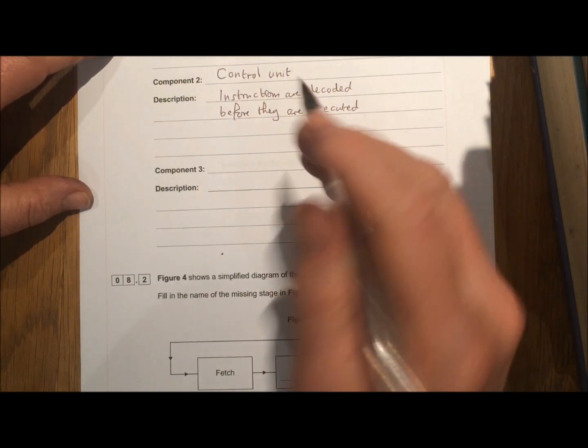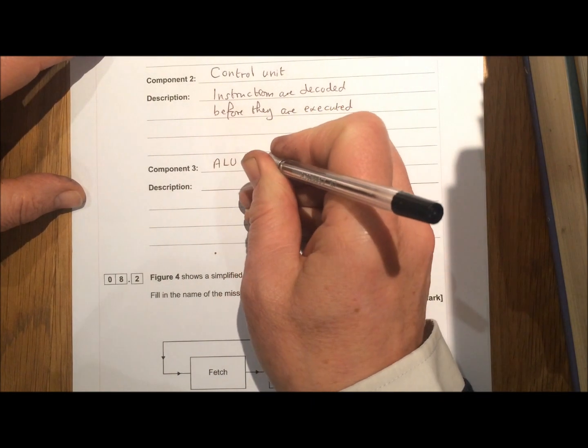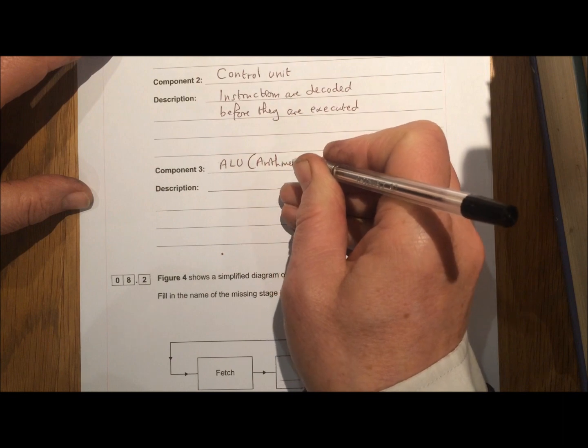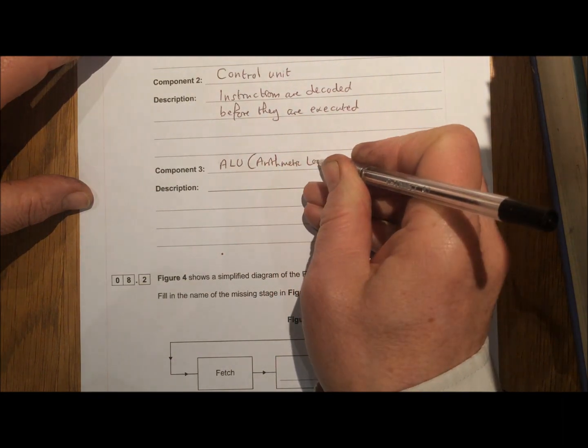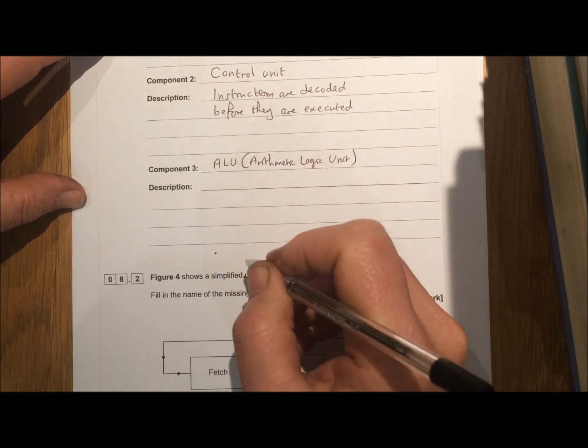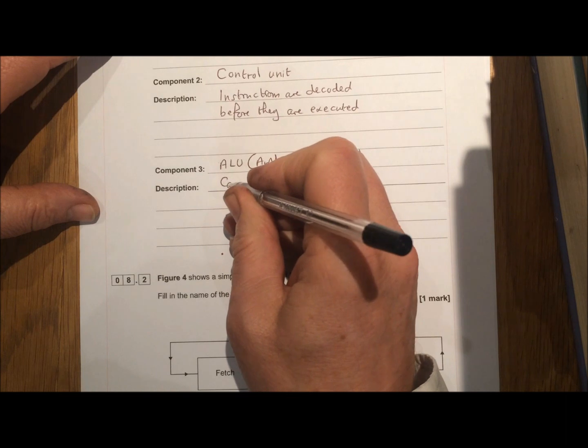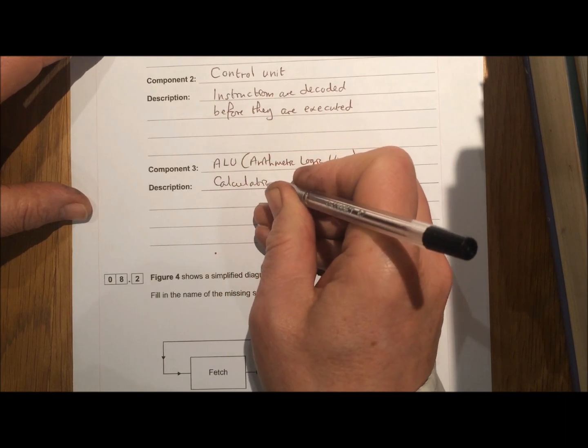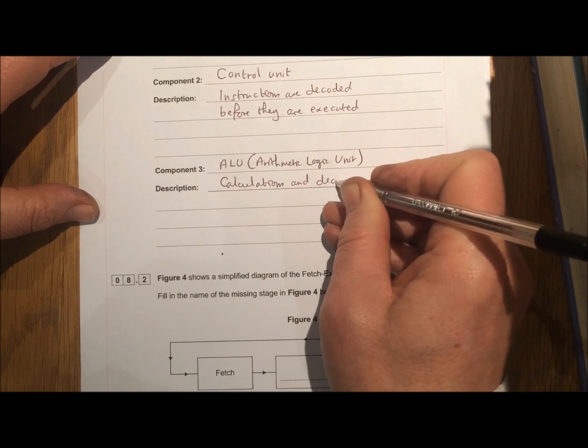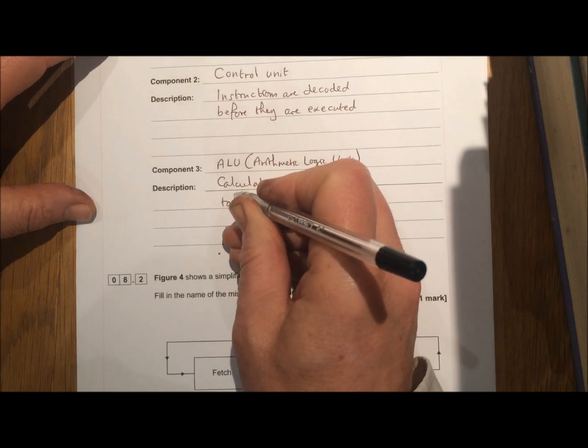Another component we could talk about. We can talk about the ALU, which stands for the Arithmetic Logic Unit. The Arithmetic Logic Unit is where all the calculations take place. So calculations and decisions take place here.